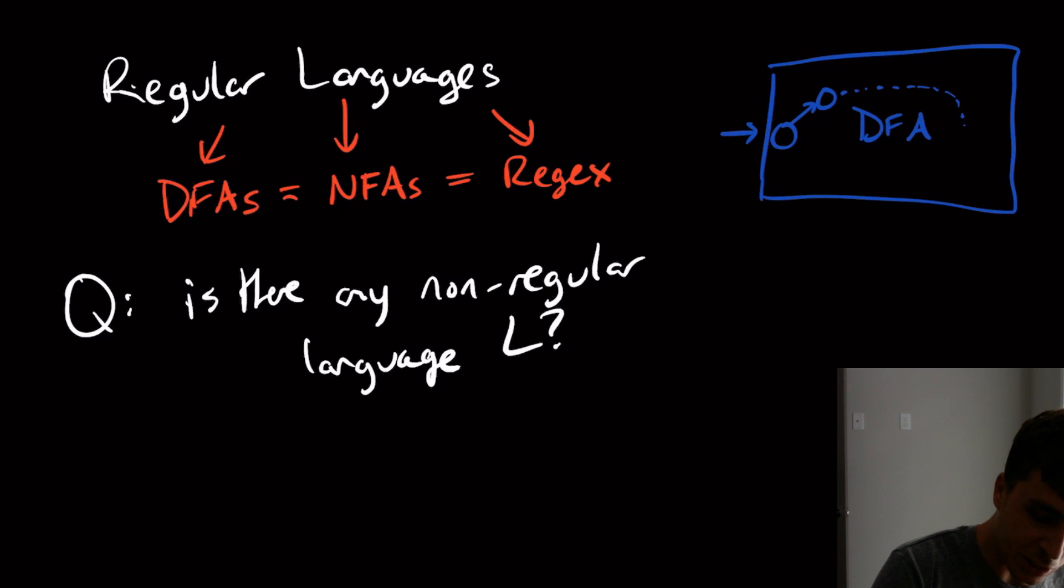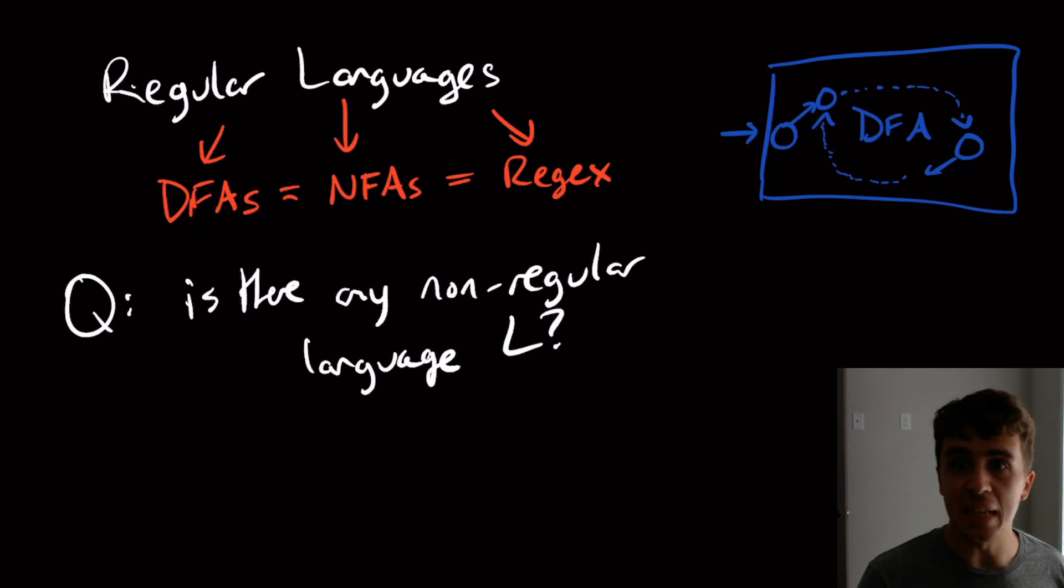And let's just say we eventually come to this state right here. Then we take some more transitions. And then let's just say for sake of argument, we end up back at this state right here, this state right here. Then what does that tell us? So let's call this, I don't know, state Q.